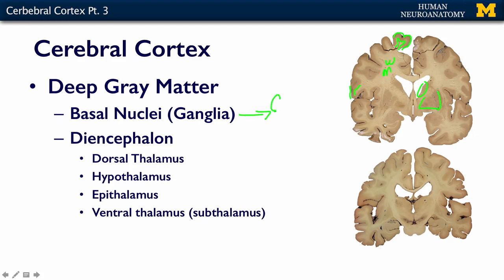Okay, so caudate, putamen, and globus pallidus. We talked about these in motor systems, that the basal nuclei or basal ganglia participate in motor behaviors.